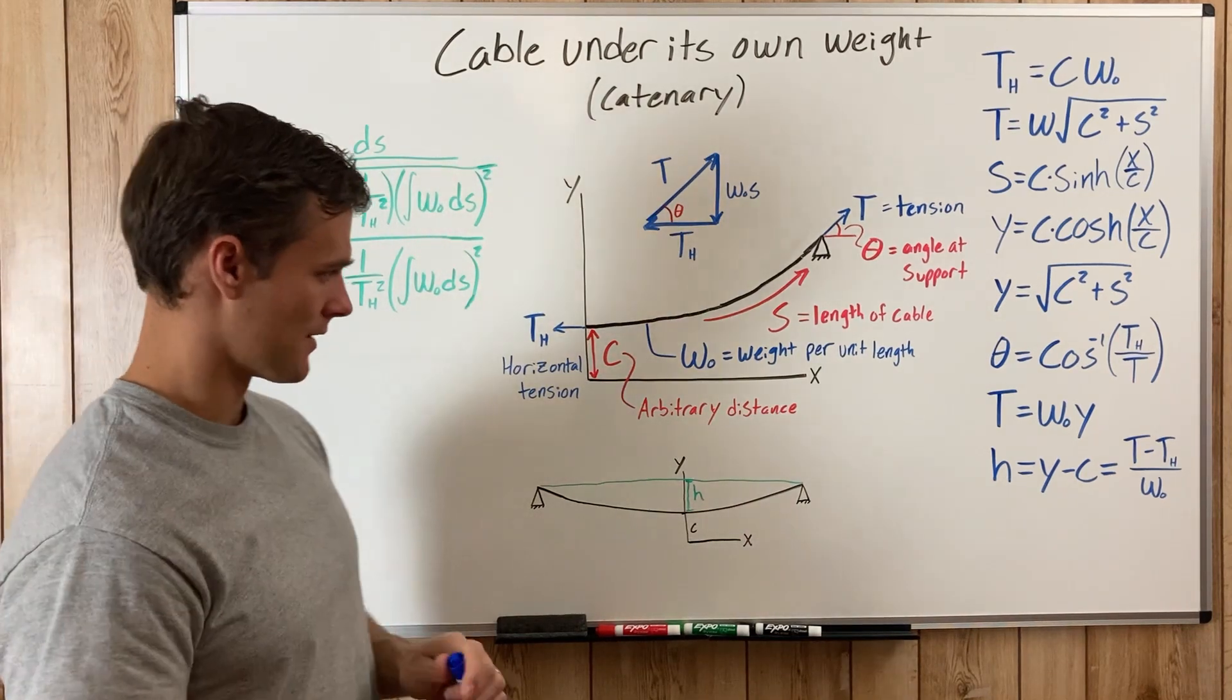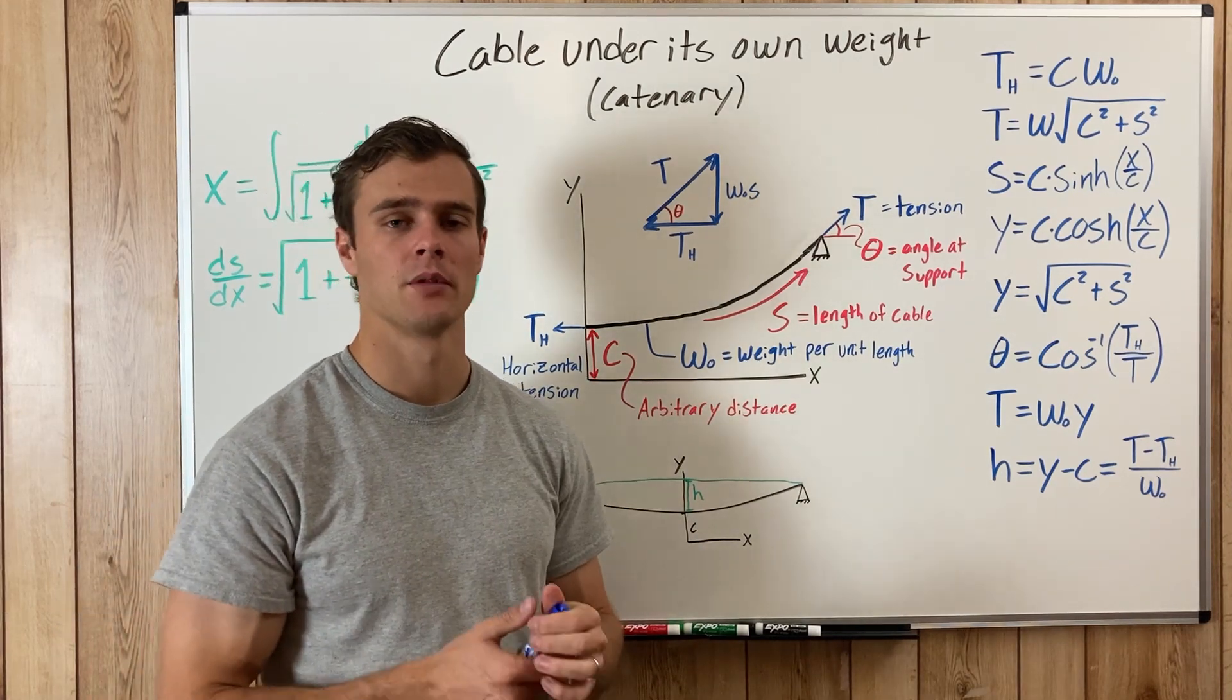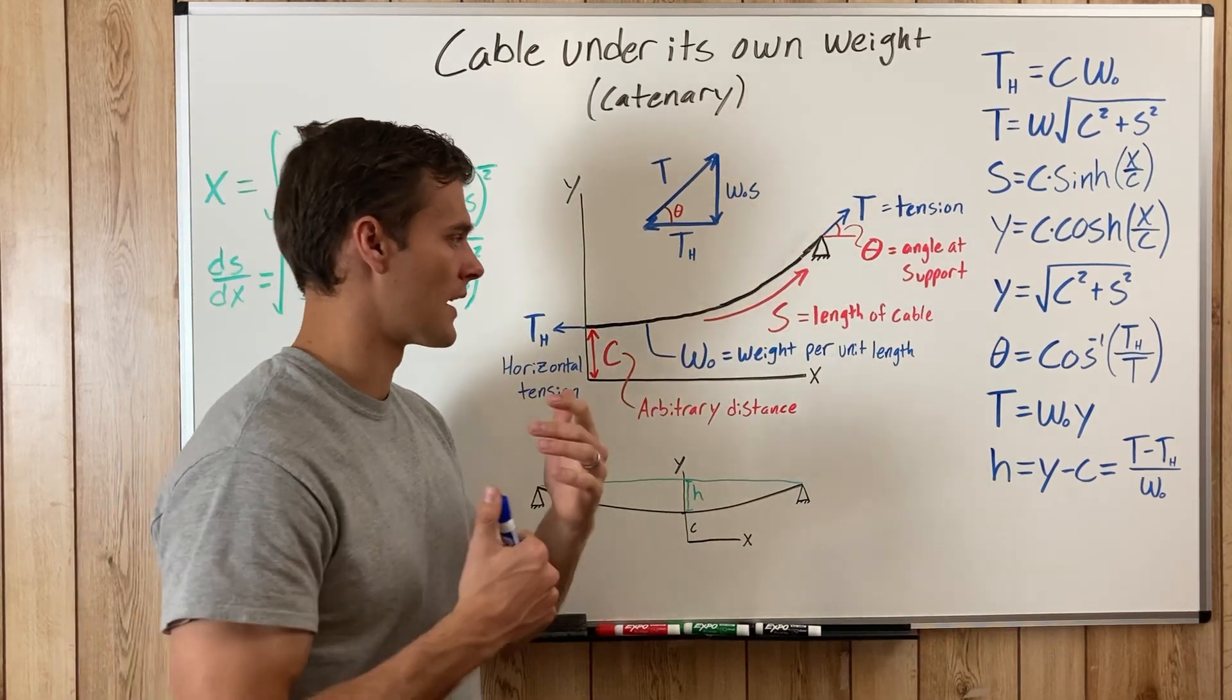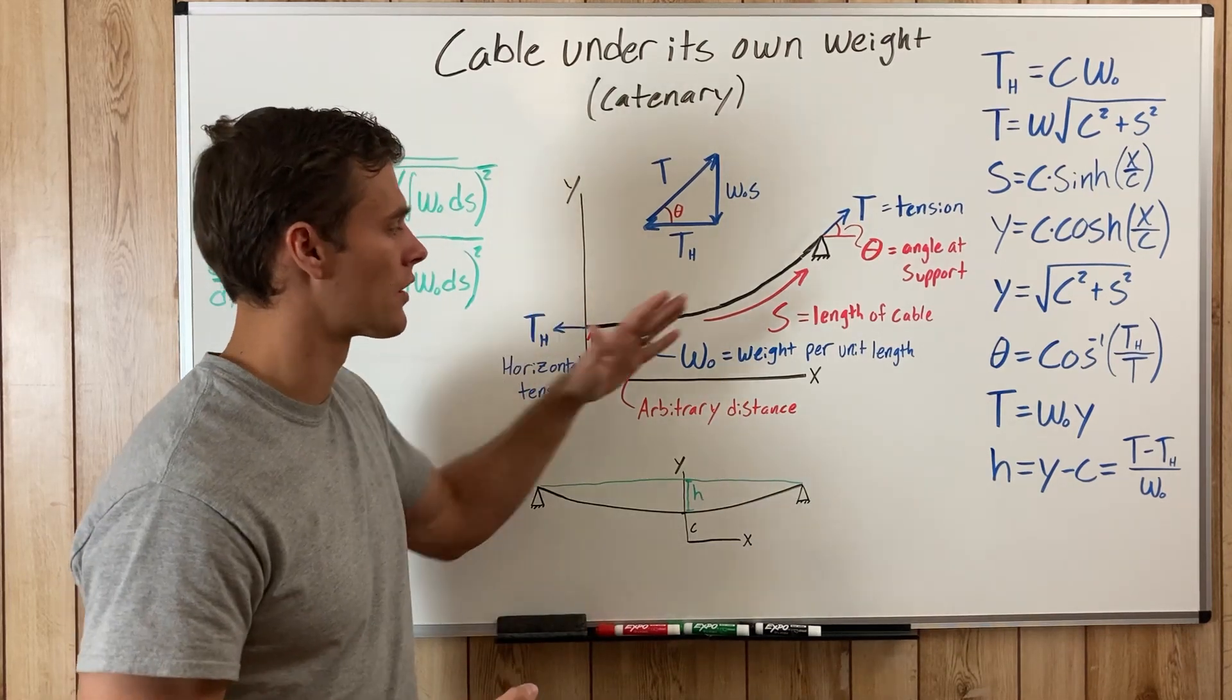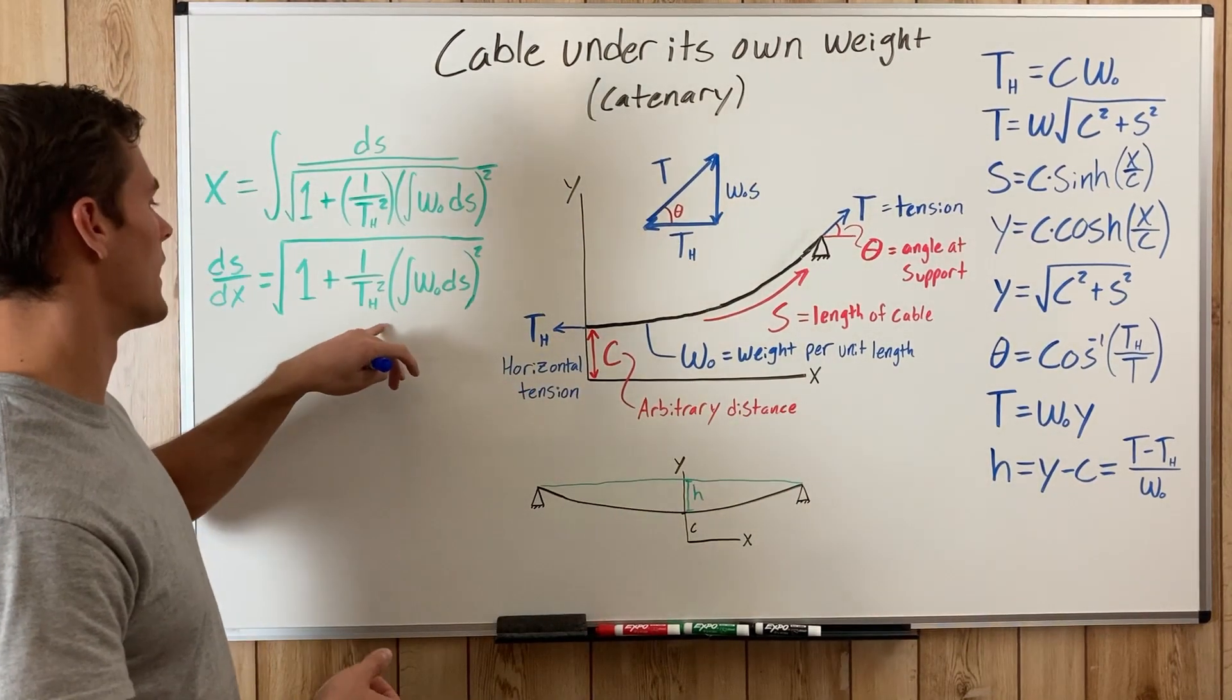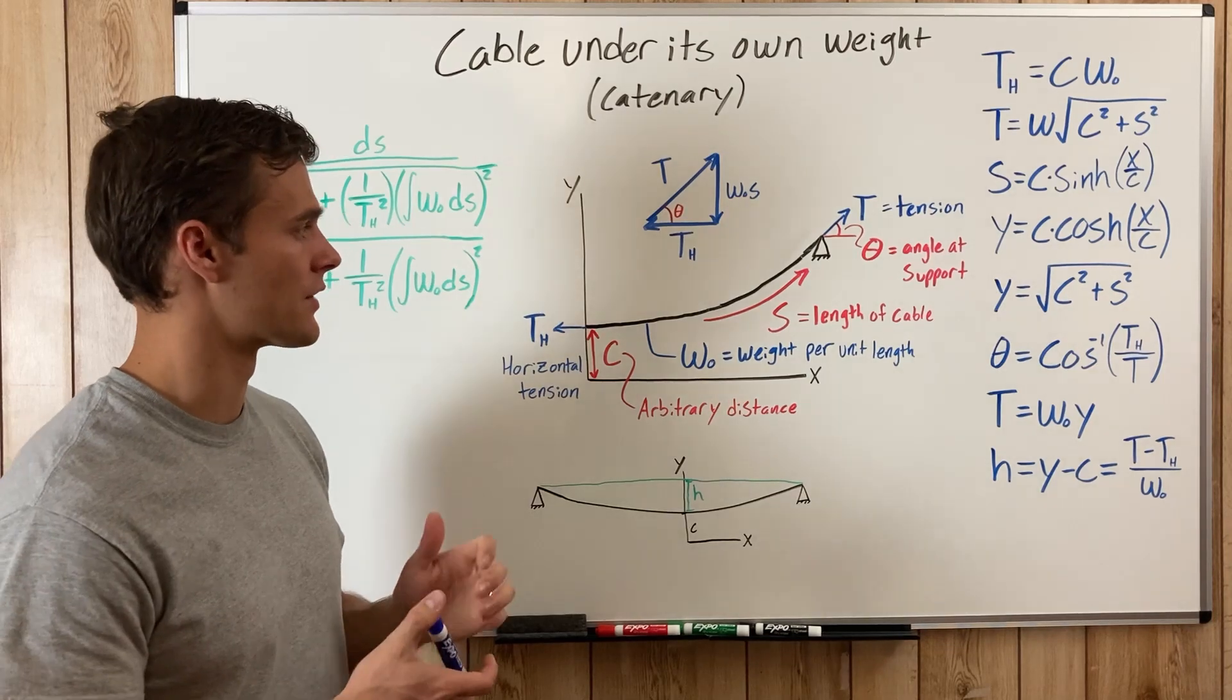Then you have w₀, which is the weight per unit length of the cable. You have s, which is the distance along the cable. You might recognize the s variable from the arc length of a circle—well, this isn't an arc length because it's not a circle, but it's the same kind of idea. These equations approximate with ds, treating them as an arc length of a circle because of the differential slice.